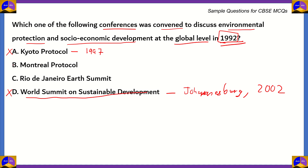What about option B, the Montreal Protocol — the protocol that brought into account the rising levels of chlorofluorocarbons and ways to tackle them? Well, this summit took place in 1987, so it was before the summit in question. Therefore, option B is also incorrect. The correct answer is option C, the Rio de Janeiro Earth Summit.